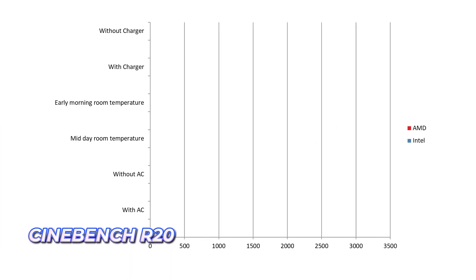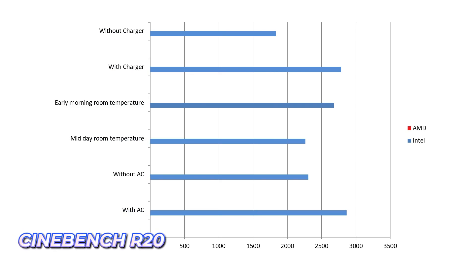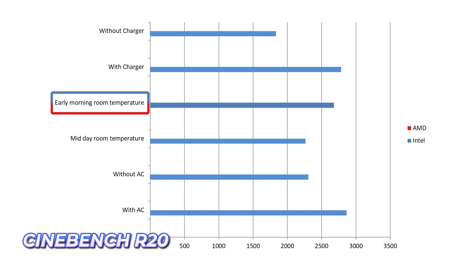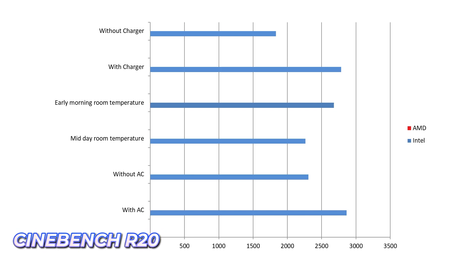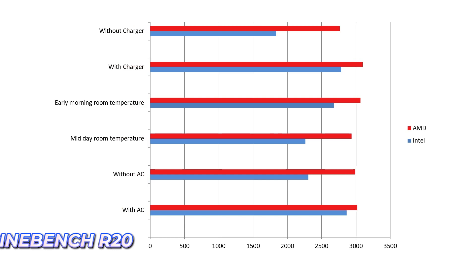Let us take a look at the Cinebench R20 scores. I tested this in different scenarios and conditions — midday room temperature, early morning room temperature, and AC-ventilated room temperature. The Intel scores and the AMD scores are on your screen right now. The AMD score is consistent — please take a look at that.